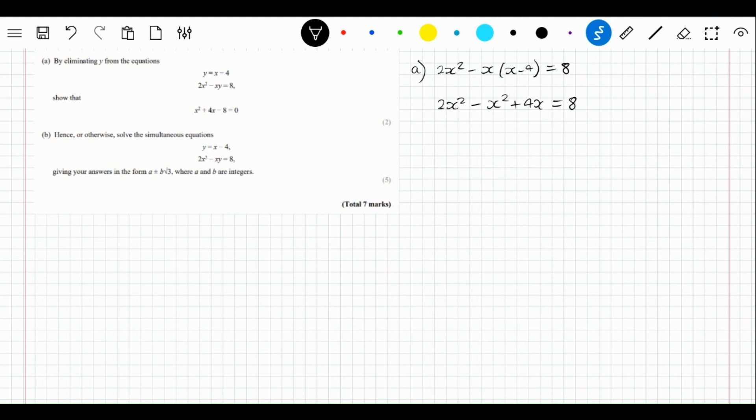We can take away one of these x squareds, so it's going to be x squared plus 4x equals 8. Then we can take away this 8 to get x squared plus 4x minus 8 equals 0.